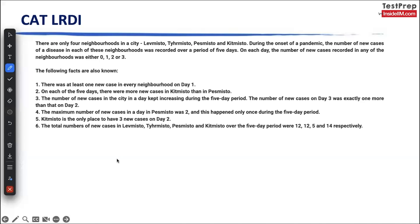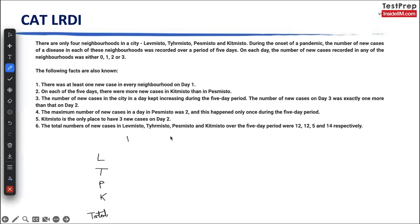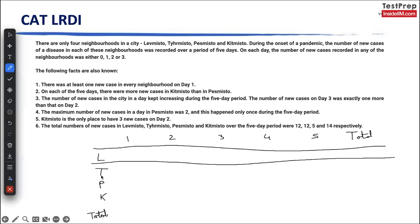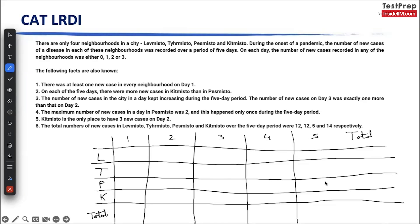There are four neighbourhoods in a city: L, T, P and K. I don't waste time writing unnecessary information, and when I'm reading I note down the information in one go. During the onset of a pandemic, the number of new cases of a disease in each of these neighbourhoods was recorded over a period of five days. On each day, the number of new cases recorded in any neighbourhood was either 0, 1, 2, or 3 — meaning not more than 3.